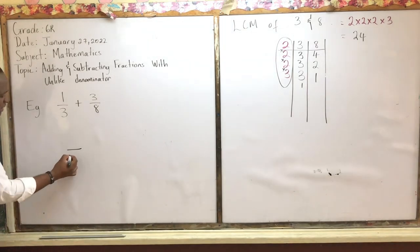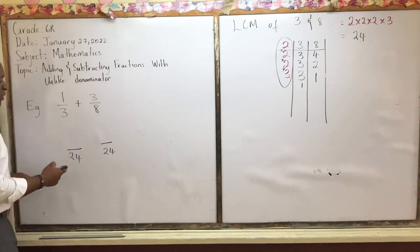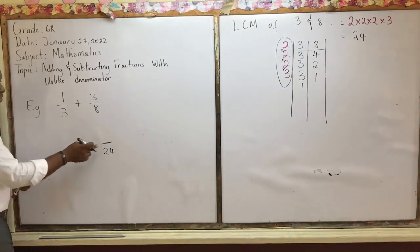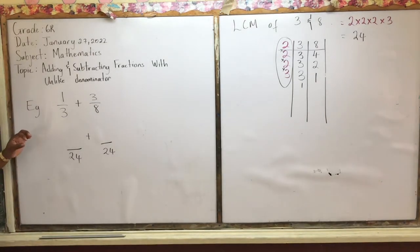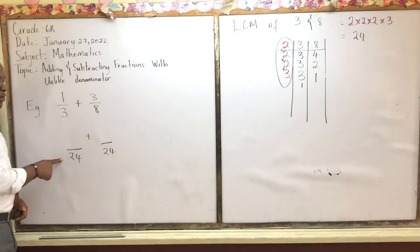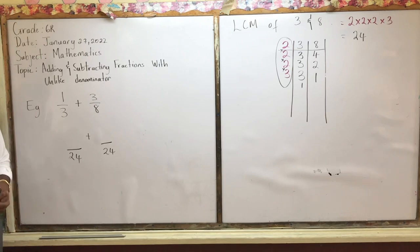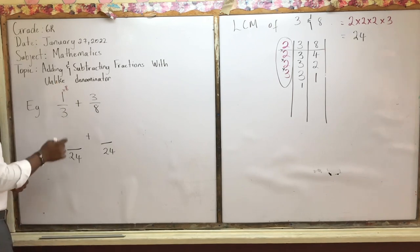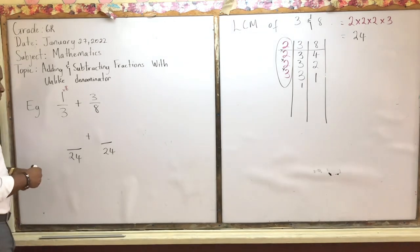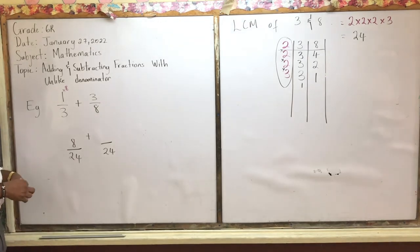Now we find what one third is when the denominator is 24. We set up both fractions with a denominator of 24 and a plus sign between them. How many times can three go into 24? Eight times. We multiply the numerator one by eight, so one times eight gives us eight. Therefore, one third equals eight over 24.